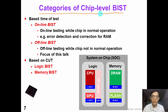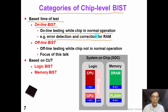Chip level built-in self-test can be classified according to different criteria. For example, we can classify BIST based on the time of testing. We can have online BIST, which performs self-testing while the chip is in normal operation — for example, online error detection and correction to protect RAM in our computer system. On the other hand, we also have offline BIST, which means we perform chip self-testing while the chip is not in normal operation. This offline BIST is the focus of this talk.